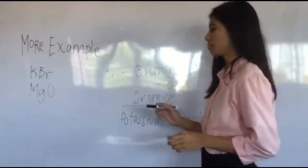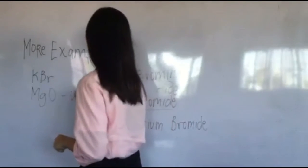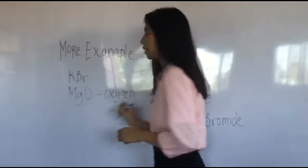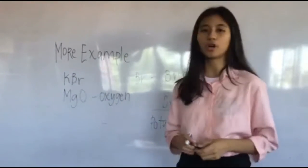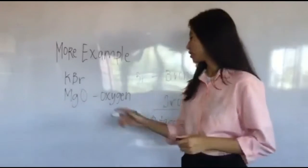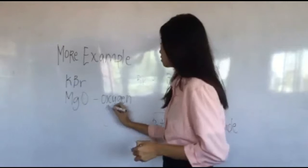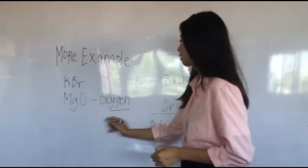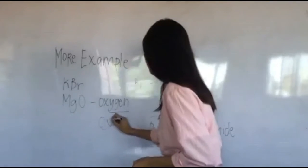Our next example is Mg and O, which O means oxygen. For some elements like oxygen, we are going to remove four last letters and replace it with I-D-E. So oxygen becomes oxide.